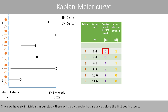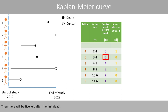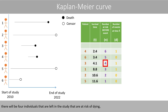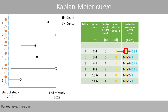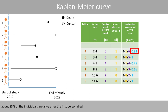Since we have 6 individuals in our study, there will be 6 people that are alive before the first death occurs. Then there will be 5 left after the first death. Since person number 6 left the study, there will be 4 individuals that are left in the study that are at risk of dying before the second death occurs. Then we calculate the fraction that has survived after the event. For example, since 1 out of 6 died, about 83% of the individuals are alive after the first person died.